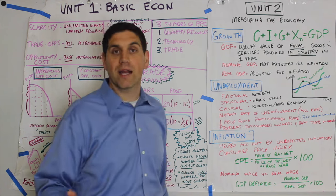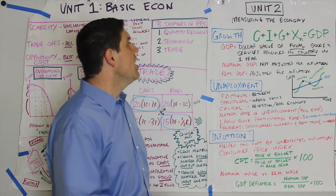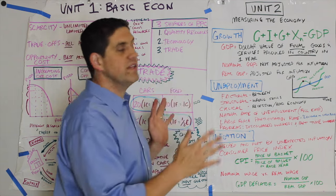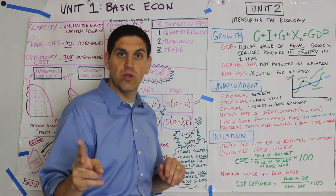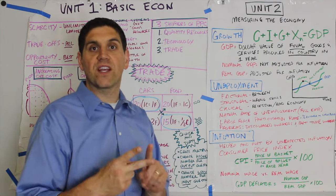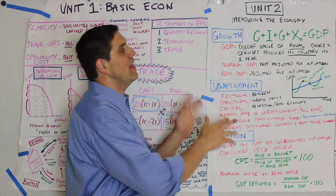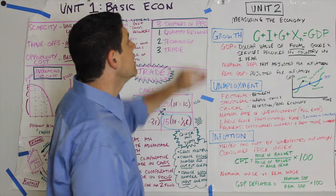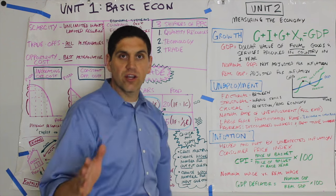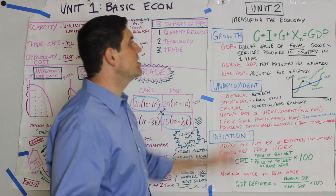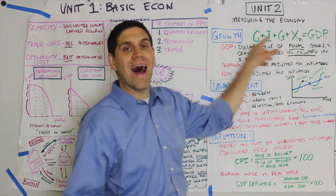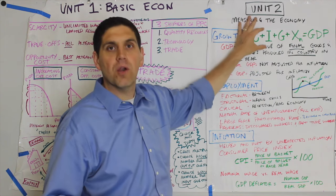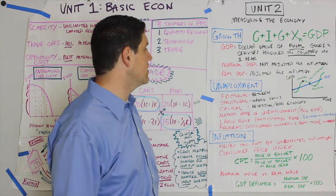Now let's jump into macroeconomics. The most important concept is GDP. The whole course is separated between two things: measuring the economy and fixing it. GDP is the dollar value of the final goods and services produced. It's made up of CIGXN. Remember, I is business spending, which is investment — it's never personal investments like stocks and bonds.